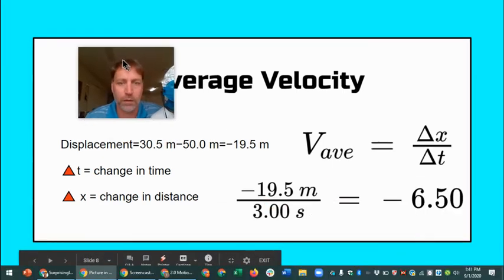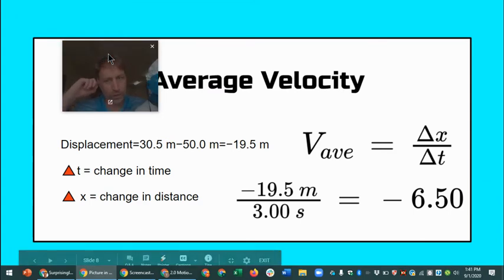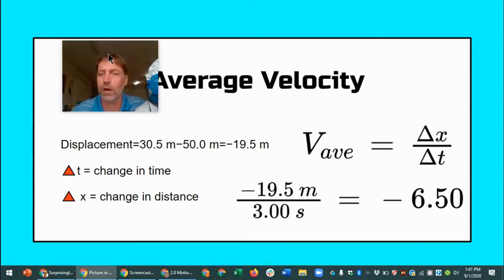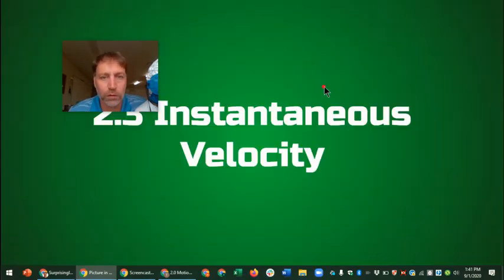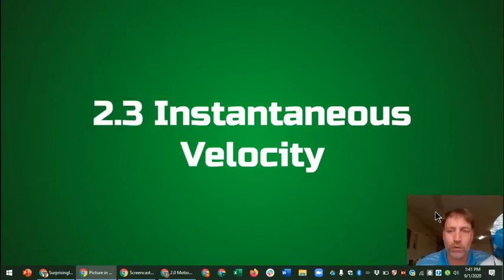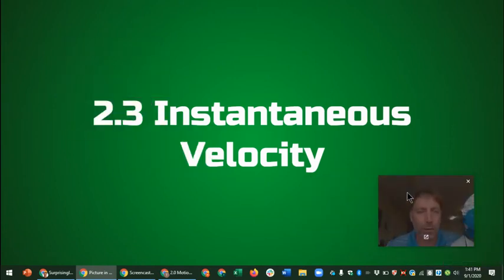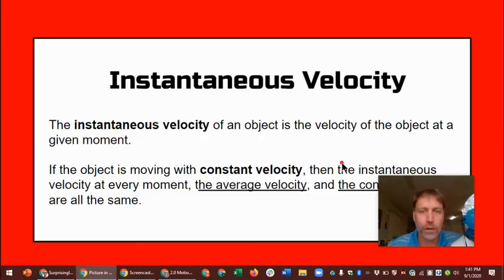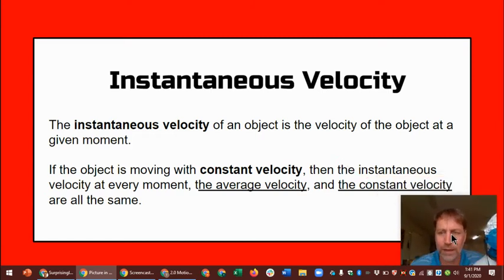And we divided that by the time it took, which was three seconds, and we had a negative 6.5 meters per second. Now that's the average of the whole three seconds. What would happen if you wanted to know the velocity at one moment, called the instantaneous velocity? What was the velocity at a particular moment or second or fraction of a second? So that's what we're going to learn about today is what's called instantaneous velocity.